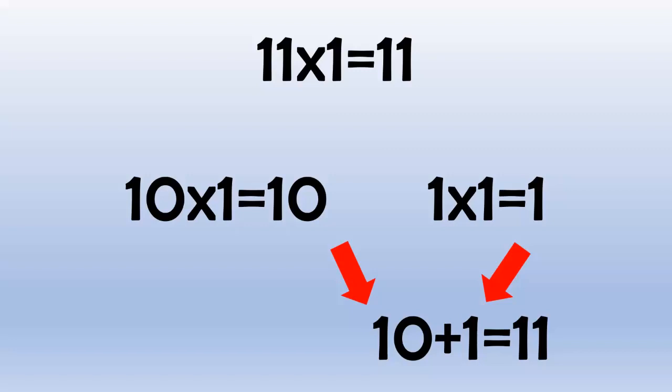11 times 8 equals 88, because 10 times 8 equals 80. 11 times 9 equals 99, because 10 times 9 equals 90, and 1 times 9 equals 9, and 90 plus 9 equals 99.